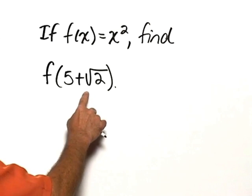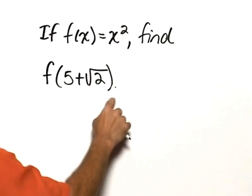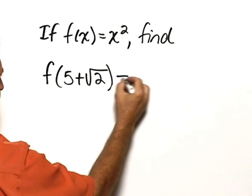So what we're going to do here is substitute 5 plus the square root of 2 in place of x. So let's put an equal sign here,